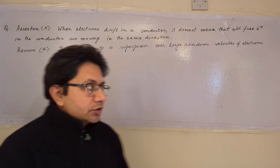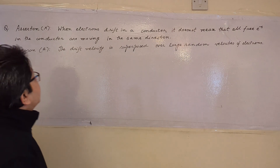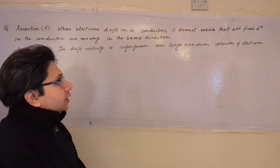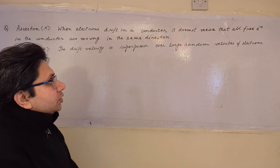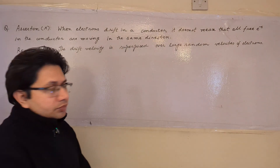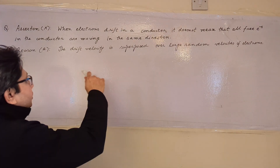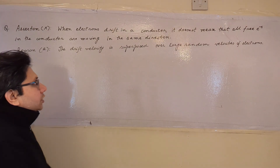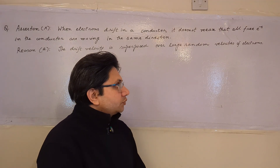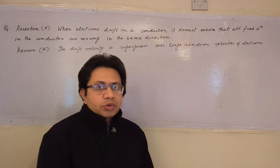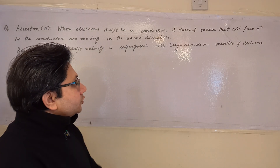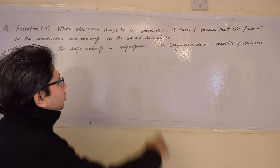The question is an assertion-reason problem. The assertion states: when electrons drift in a conductor, it does not mean that all free electrons in the conductor are moving in the same direction. The reason states: the drift velocity is superposed over large random velocities of electrons. This problem is based on the topic of current electricity, and we have to check whether the assertion and reason are correct.